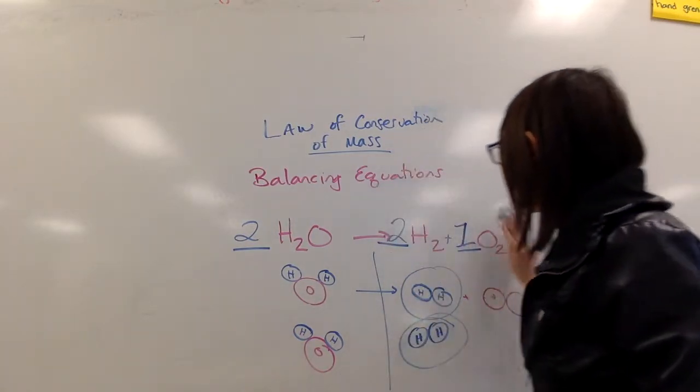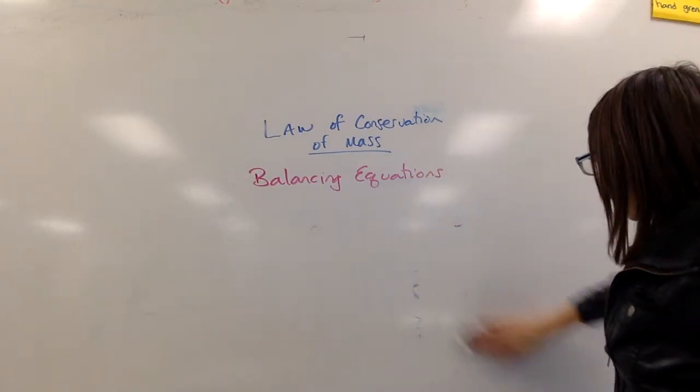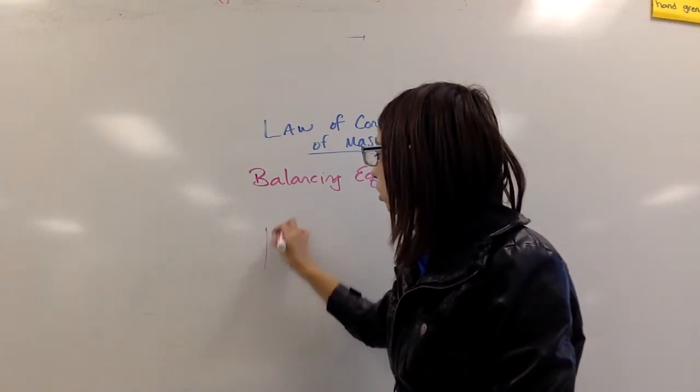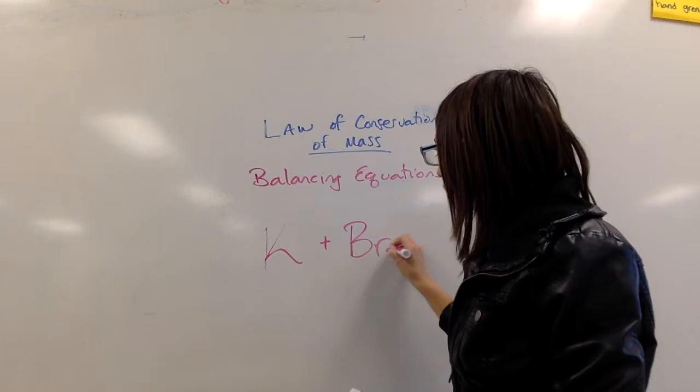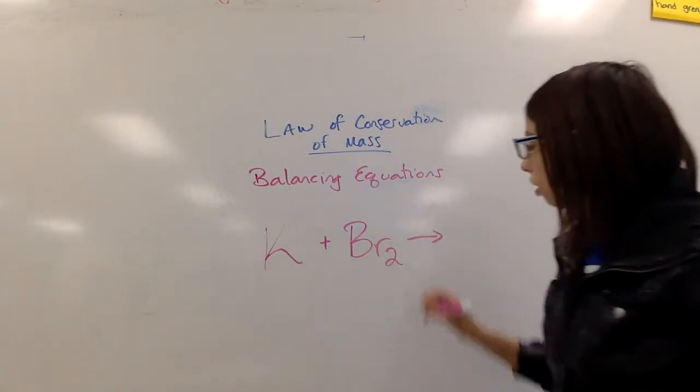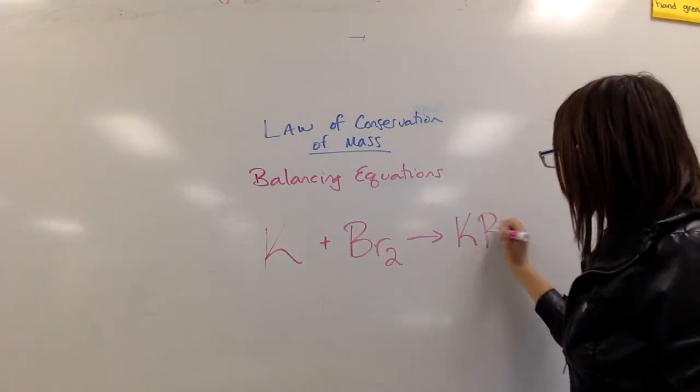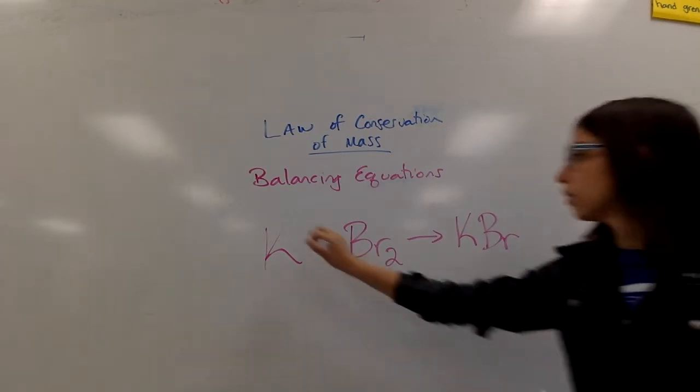Let me give you one to try at home. I want you to balance the synthesis of potassium bromide. So K plus Br2 yields KBr. Pause the video and unpause it when you're ready to go over this.